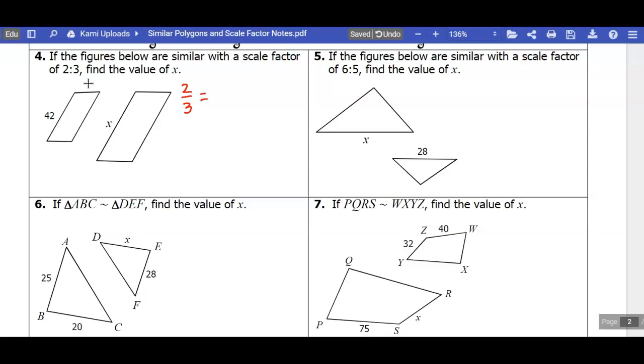So that means that if the two corresponds to the small one and the three corresponds to the big one, I can write 42 over x as a ratio of a pair of corresponding sides, and I know that that's going to have to reduce down to two-thirds. So then I just need to solve this, so I'm going to cross-multiply, and I get 2 times x is equal to 126. I'll divide both sides by 2, and I get x is equal to 63.